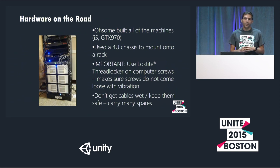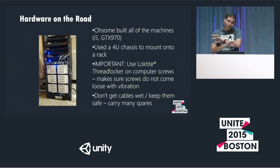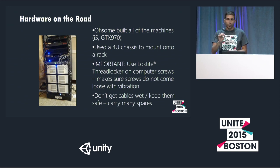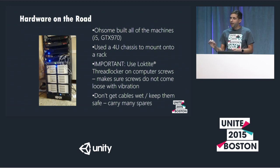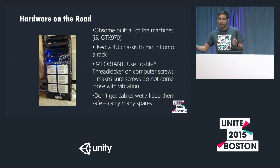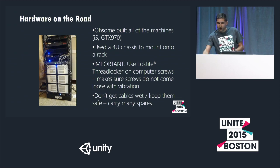Hardware on the road: try to use server chassis — we use 4U chassis to keep everything in place, rack-mounted down into the trailer so things are pretty sturdy. One really important thing: use Loctite — it's like a little blue paint you put on the screws when putting hardware together. As the machines are moving and vibrating, the screws won't come loose on their own. We did fry a motherboard because one of the motherboard screws popped out. Keep your cables safe and dry — the Red Mule cables can be pretty expensive.